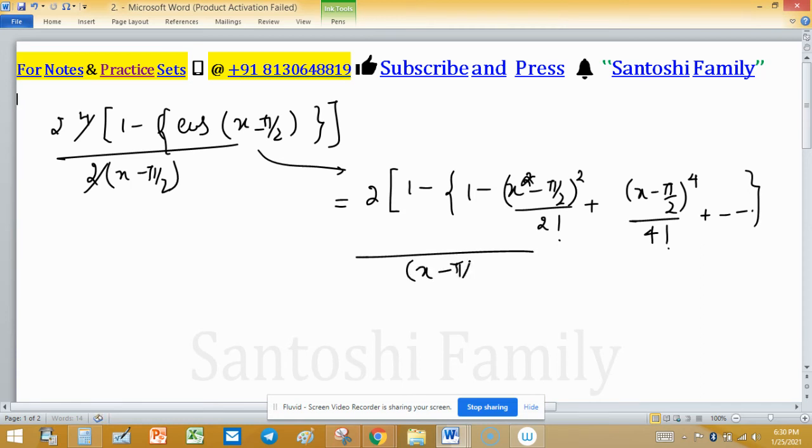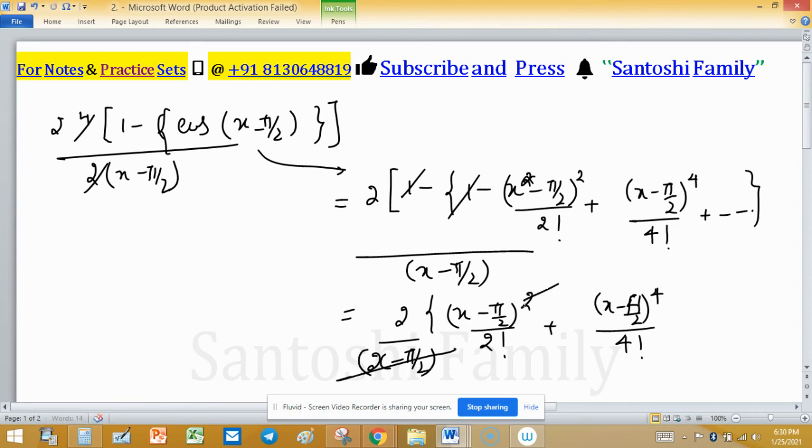This one cancels out by this one. Now remaining terms is 2 times [(x - π/2)²/2! + (x - π/2)⁴/4!] and (x - π/2) in denominator. Now this cancels out by this.